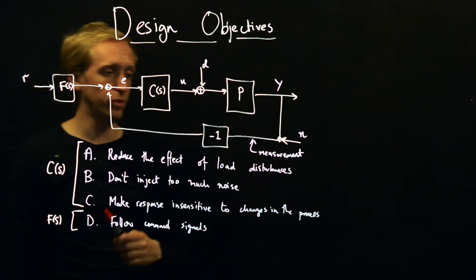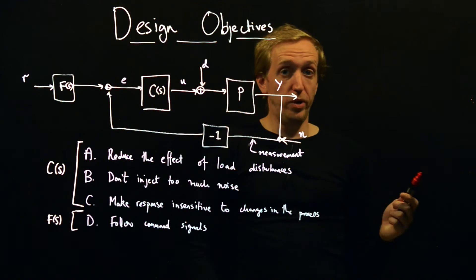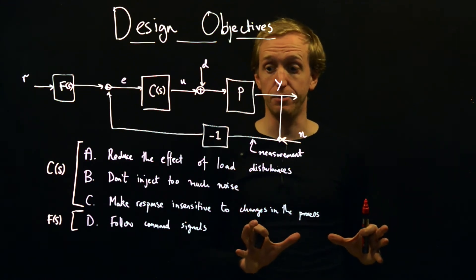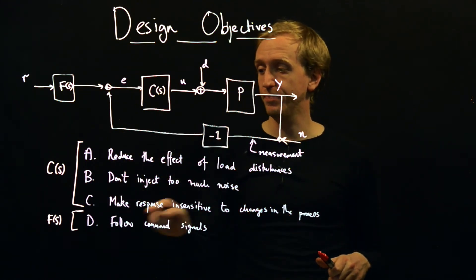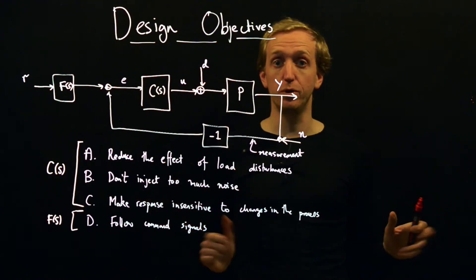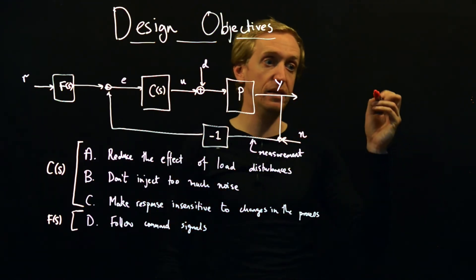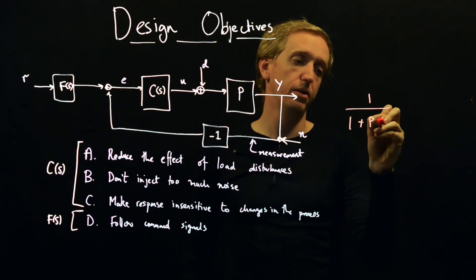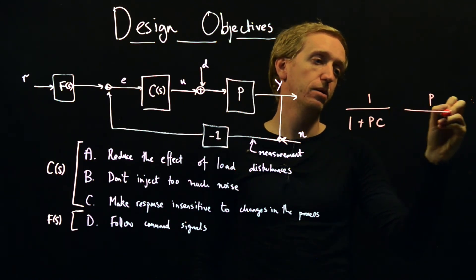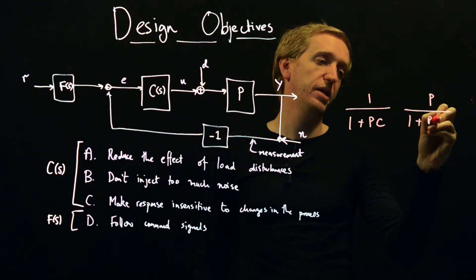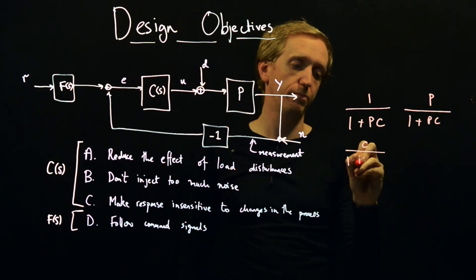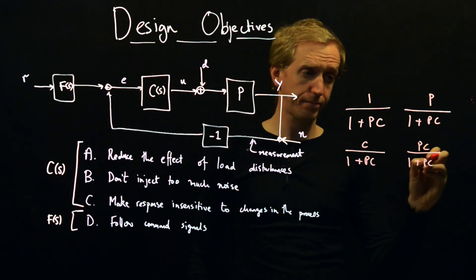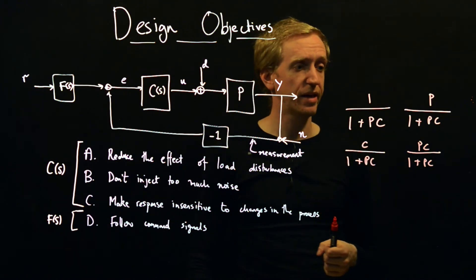So at a very high level, these are all the design objectives. We're going to be trying to understand these design objectives through a set of closed loop transfer functions. And with respect to A, B and C, the closed loop transfer functions that are important are these ones. So I'll just write them all out. It's 1 over 1 plus PC. And then P over 1 plus PC. C over 1 plus PC. And PC over 1 plus PC.